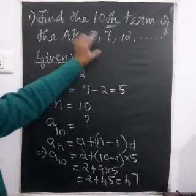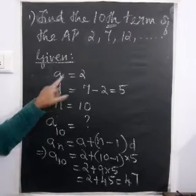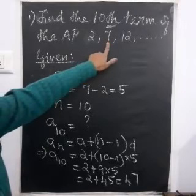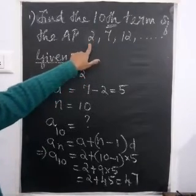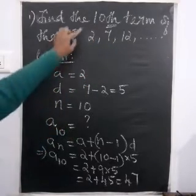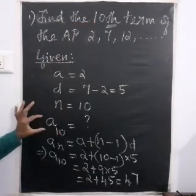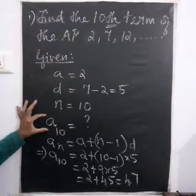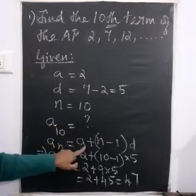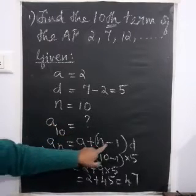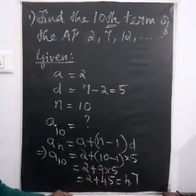From the AP, we found the first term and the common difference by subtracting the second term from the first term. The number of terms is given, so we substitute into the formula A plus (N minus 1)D to find A10 and get the answer.